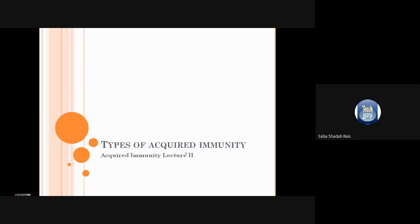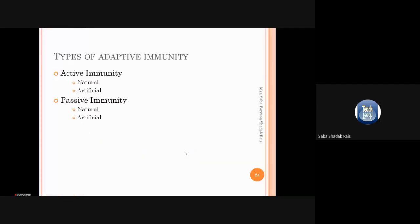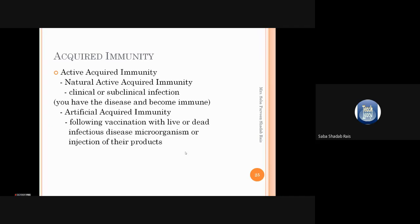On the basis of the way of exposure to the microorganism, acquired immunity is classified as active immunity and passive immunity. Active immunity is further classified as natural immunity and artificial immunity. Similarly, passive immunity is also classified as natural and artificial. We will discuss each type in detail.